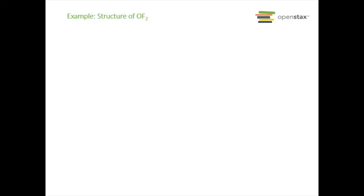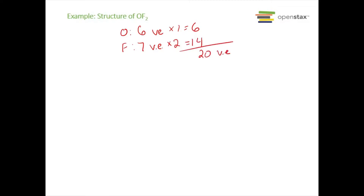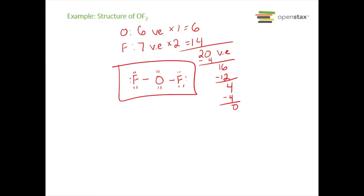One more example: OF2. Oxygen has six valence electrons and fluorine has seven times two = fourteen, for a total of 20 valence electrons. Oxygen is less electronegative so it goes in the center with a fluorine on either side, connected by single bonds using four electrons, leaving sixteen. Filling the fluorines' octets uses twelve electrons, leaving four for the central oxygen. Placing two lone pairs on oxygen completes the structure. The central oxygen has two lone pairs and two bonding pairs, and each fluorine has three lone pairs and one bonding pair.